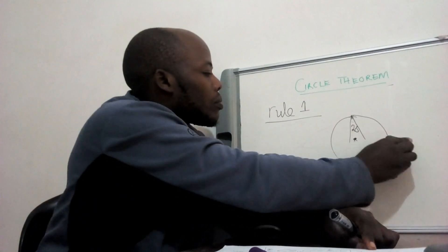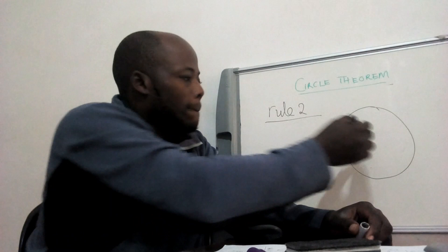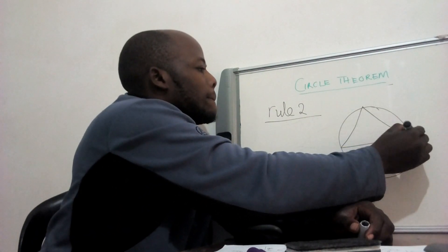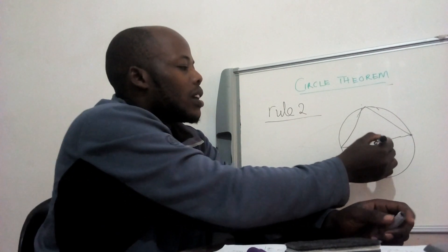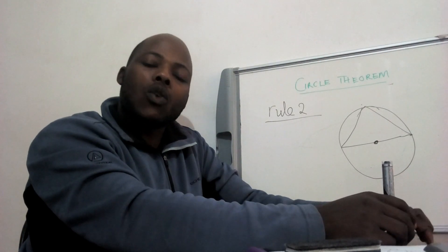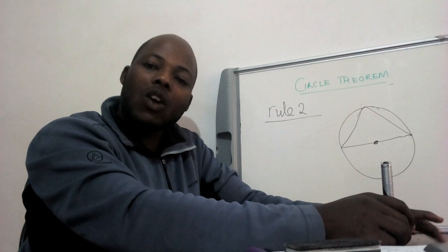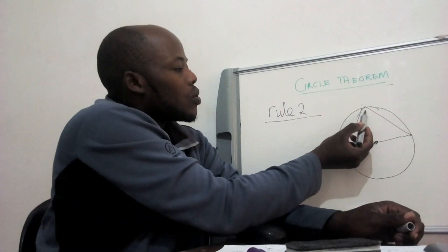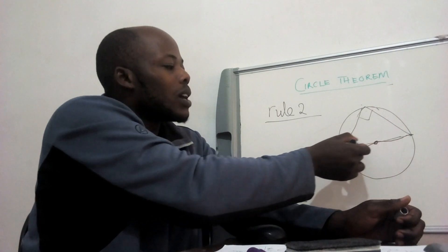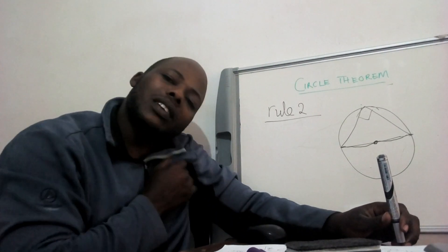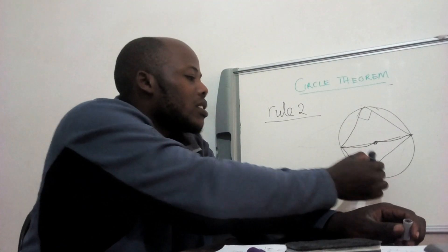Let's check property number two. This is the center; you can see this is a diameter. An angle, or a triangle formed inside a semicircle, has got a 90-degree angle at the circumference. This triangle is inside the semicircle which has been cut by this diameter. It doesn't matter where this angle is — it would still be 90 degrees.